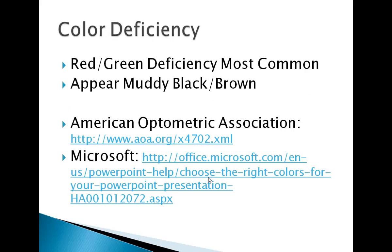I want to spend a couple minutes talking about color deficiency. About 5% of the male population has some degree of color deficiency, and the number may actually be higher. The most common type is red-green deficiency, and in a group of 25 students I've frequently had at least one color-deficient person. Always consider the possibility of having color-deficient participants. Red and green are difficult for people with red-green color deficiency to distinguish — they appear as a muddy brown color. If you had red text on a green background, the person may not be able to read it at all. Be aware of the colors you choose.